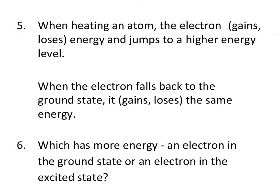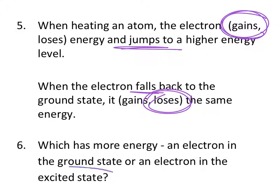So let's answer a couple of questions. When heating an atom, the electron gains energy and jumps to a higher energy level. When the electron falls back down to the ground state, it loses that same amount of energy. So which has more energy, an electron in the ground state or one in the excited state? The excited state does, because when it has more energy, it jumps up and then it loses that energy to go down. So up higher is excited and down lower is the ground state.